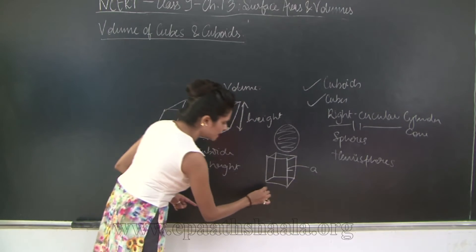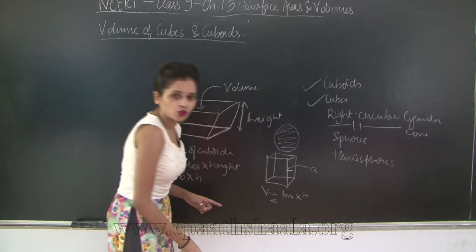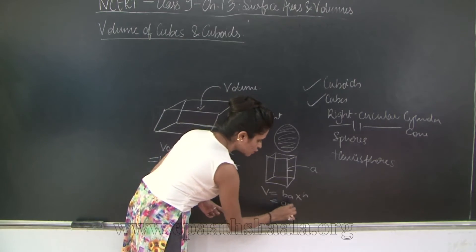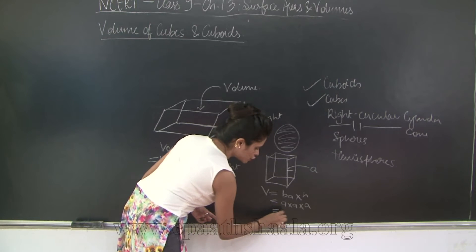So what is the volume going to be? The volume is again going to be base area into height. So base area is what? Length into breadth which is A into A, and into height which is also A. So this is going to be A cube.